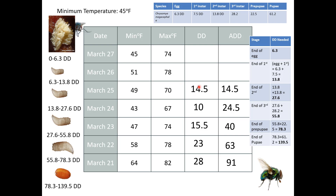Average temperature between the two minus the threshold times a unit at a time — we get 14.5 degree days accumulated on the 25th. We put them in the piggy bank. Day before is 10, then we add them up: 14.5 plus 10 is 24.5. Then we add 15.5 for 40, et cetera. So instead of starting on March 27th, we start on March 25th.